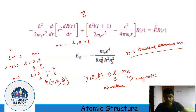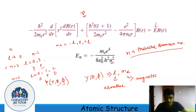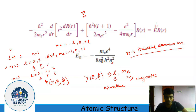Similarly, for n = 4, I can have four types of orbitals: s, p, d, and f. When L is 0, M_L is 0. When L is 1, M_L has values −1, 0, and +1. For L equal to 2, M_L has values from −2 to +2. So for a particular value of L, there are 2L + 1 possible values of M_L.